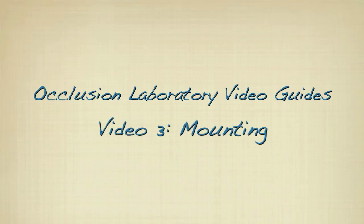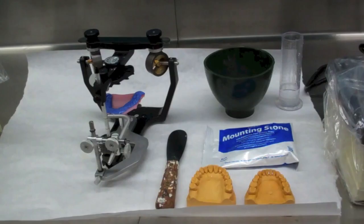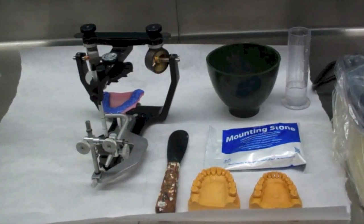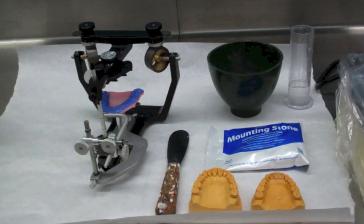Occlusion Laboratory Video Guides Video 3: Mounting. For this exercise, you will need your facebow transfer, articulator, rubber bowl and spatula, and mounting stone.